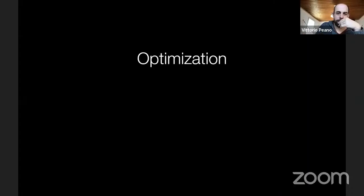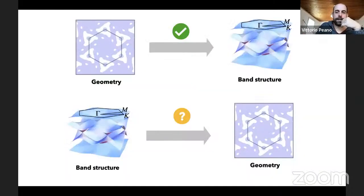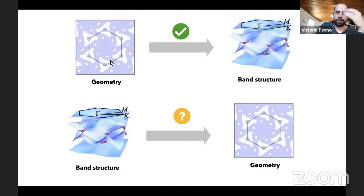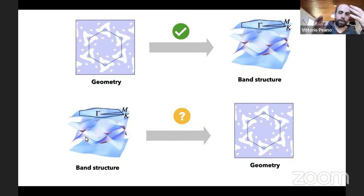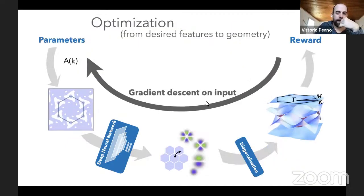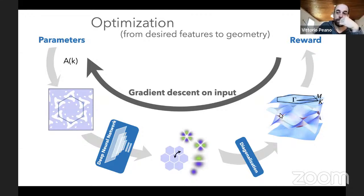The next step is inverse design: not just predicting the band structure for a given configuration, but going the other way — you specify a desired band structure or some feature of it, and I find the potential that produces it.